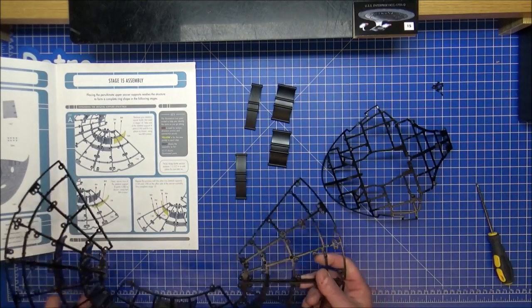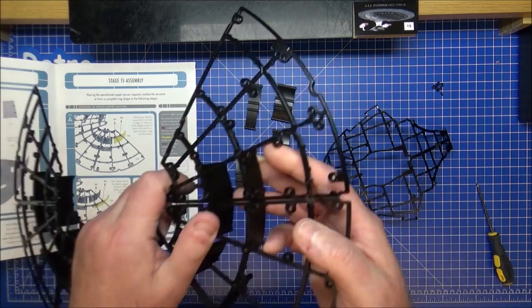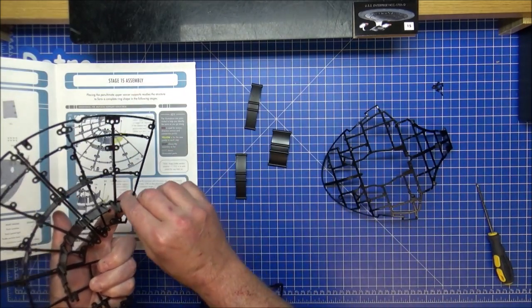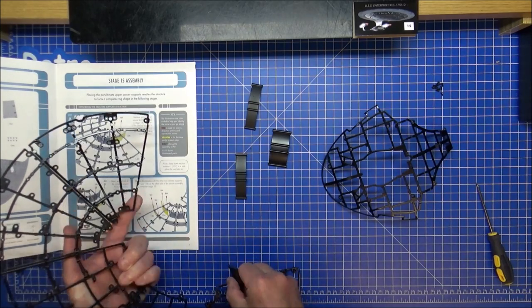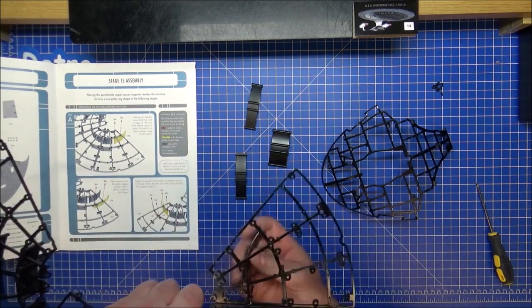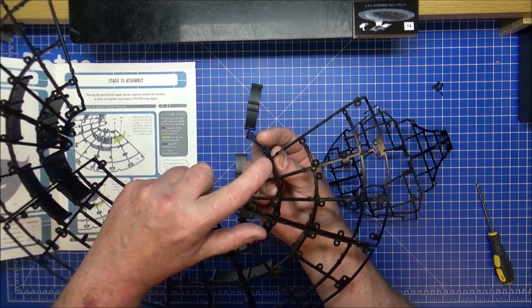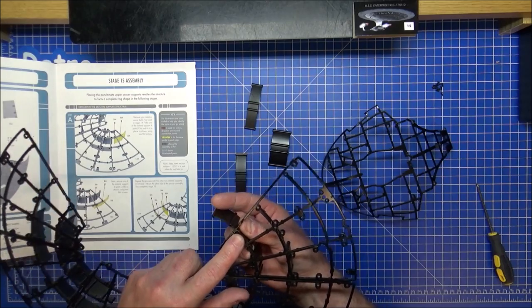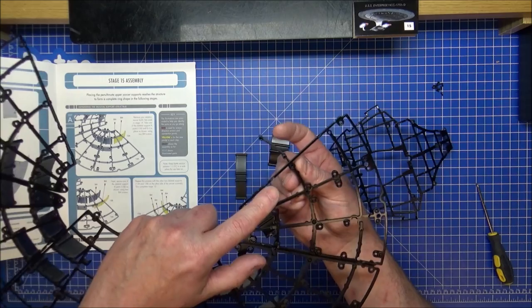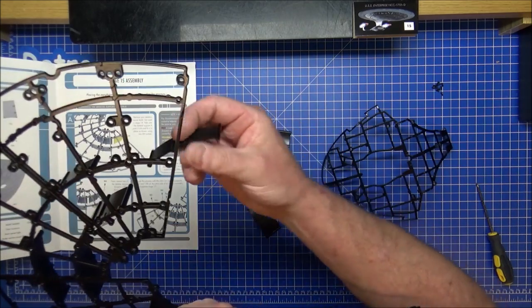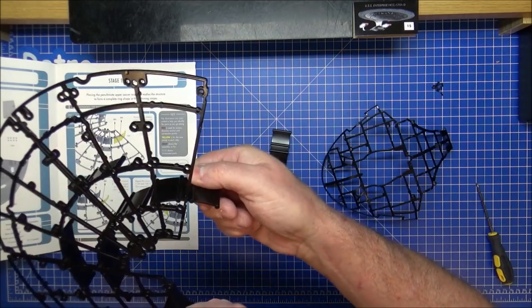Back of the bridge, two large supports, two small supports, and some screws. Now, placing the penultimate upper saucer supports, ready as the structure to form a complete ring shape in the following stages. Looks like we get this little small piece which we got from last time.